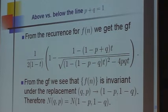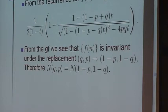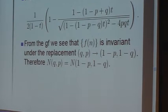Something you can see from the generating function is that f of n is invariant if you replace q, p, the two probabilities, by one minus p and one minus q. The generating function doesn't change. And so the problem doesn't change. The value of capital N that gives you the optimum is the same as it was before you made that swap.